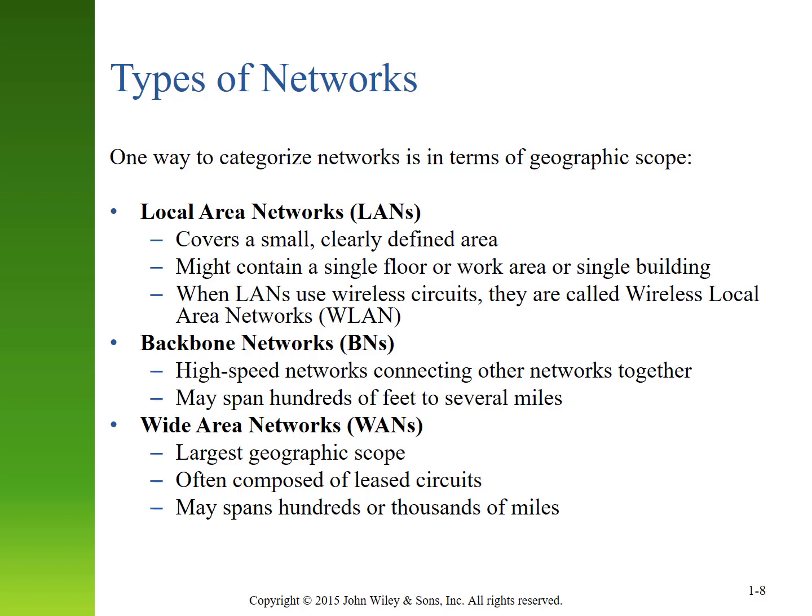In many cases, it's convenient to categorize our networks based upon geographic scope, though this is an imperfect way of doing so. There's a lot of gray area in terms of how we would define the geography of a network. Typically, a small network that might contain a single room, a single floor of a building, a single small business, or a single home might be considered a local area network or a LAN. Many LANs use wireless circuits, but they might also use wired networks. When connecting multiple networks together across greater distances, you will probably take advantage of a backbone network. These are high-speed networks, typically larger in size — something from hundreds of feet to several miles in distance — and their purpose is connecting other networks together. We have a campus backbone here at Texas A&M that connects various local area networks in each of the buildings to other local area networks in other buildings all over campus.